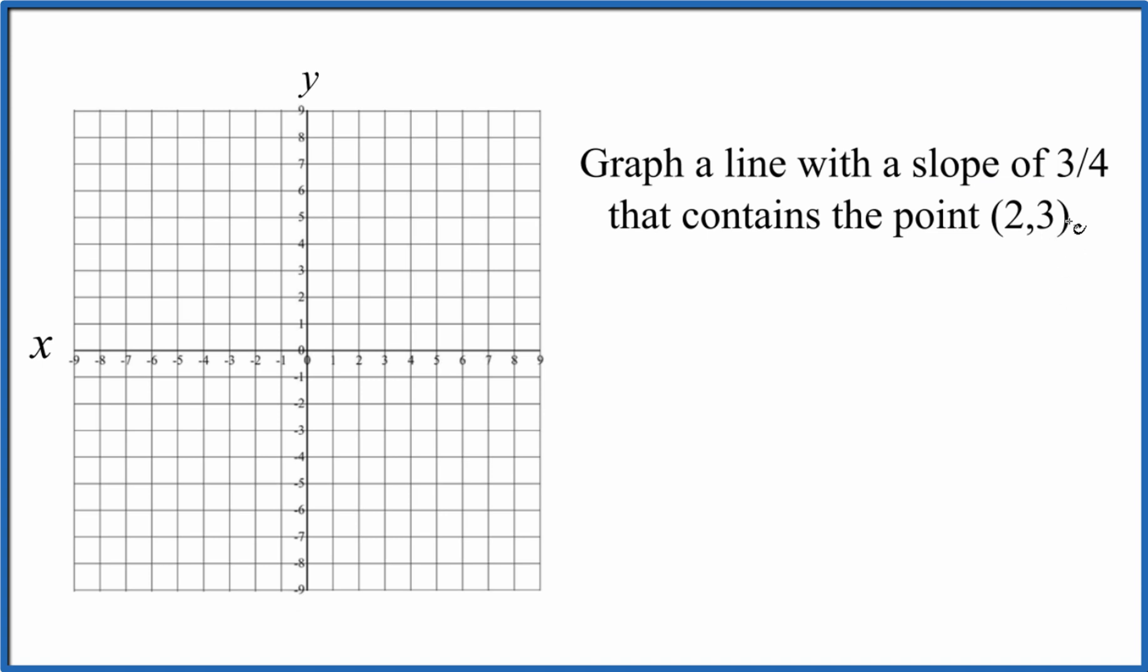So let's start off just by putting this point. We'll plot this point 2 comma 3 here. So we go to 2, 1, 2 on the X, and then 1, 2, 3 on the Y. That's our point.